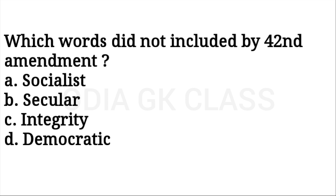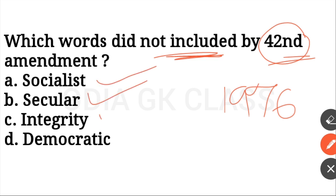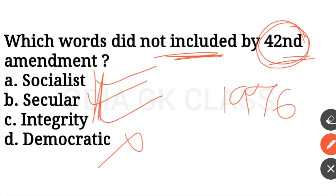Next question: what was not included by the 42nd Amendment? The 42nd Amendment was made in 1976. It included the words socialist, secular, and integrity into the Preamble of the Constitution.